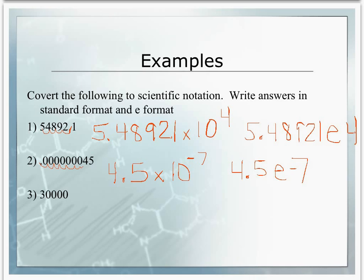In number 3, we are going to write our number with 3 as our coefficient. None of the zeros are significant, so we will not include them in our coefficient — we will just include the 3. We write our times 10 or our E, and we count how many places we've moved it: 1, 2, 3, 4. So our exponent will be 4. Since 30,000 is greater than 10, both the exponent and the number next to the E will be positive.